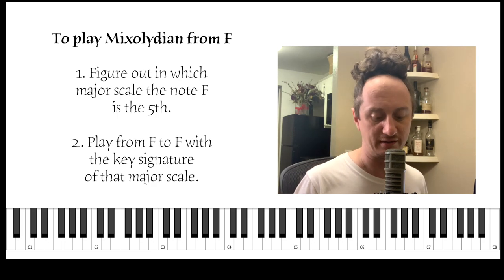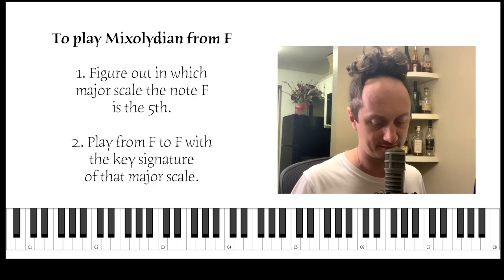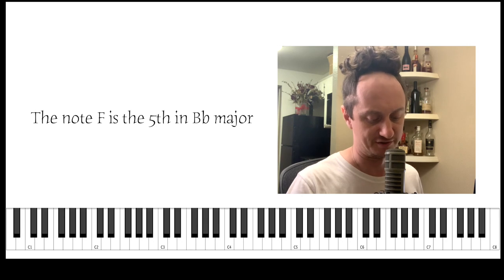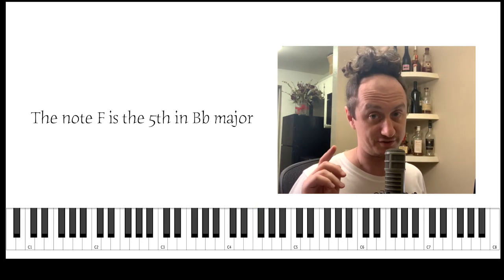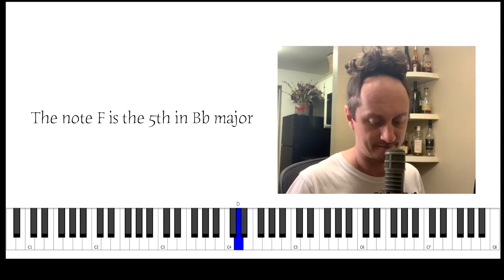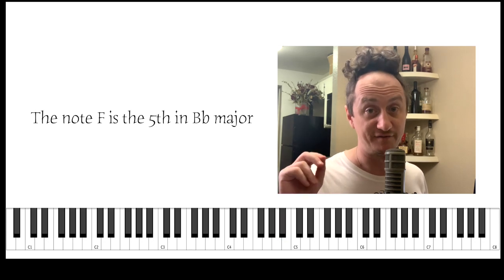Then when I find that major scale, I'm going to borrow its key signature and use it when I play my F scale, and that's going to make my F scale Mixolydian. So in which key is the note F the fifth? Bb major: Bb, C, D, Eb, F, the fifth note. Okay, so what's the key signature of Bb major? Two flats: Bb and Eb.